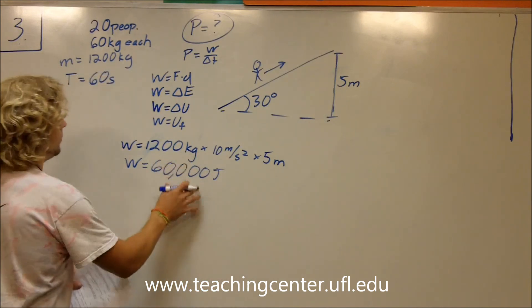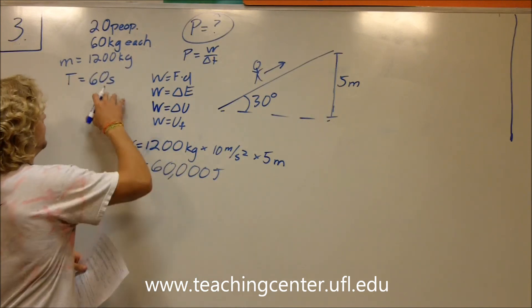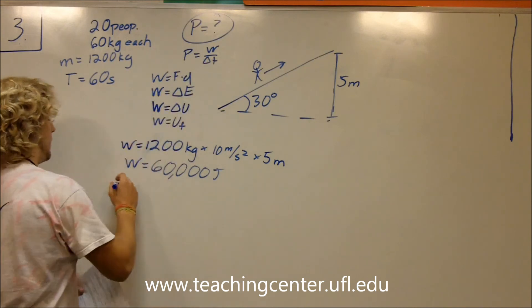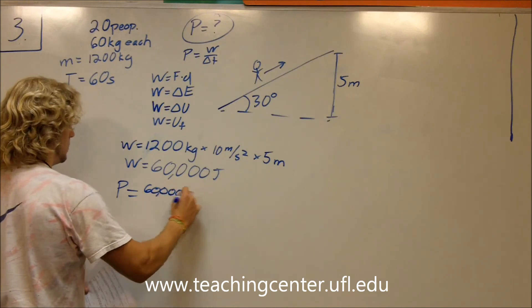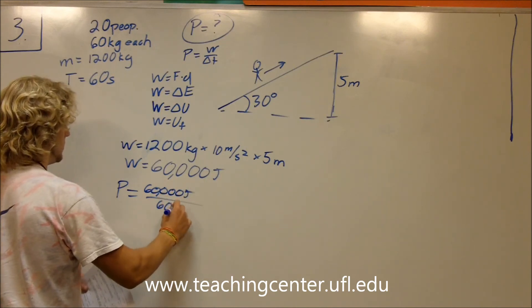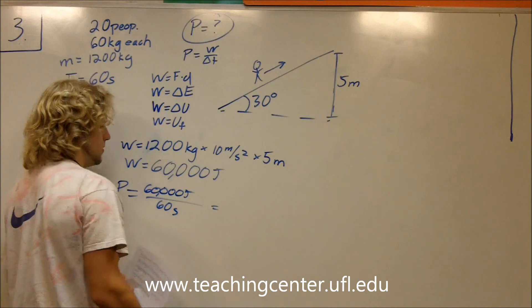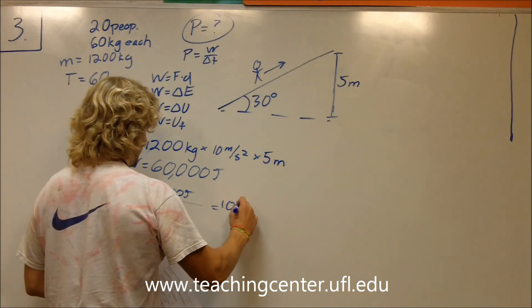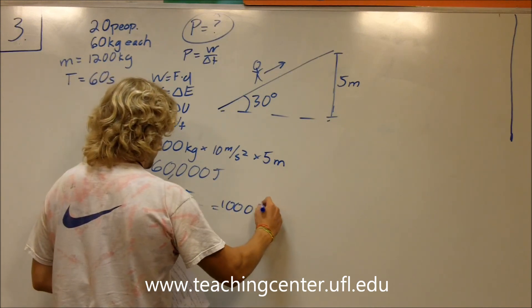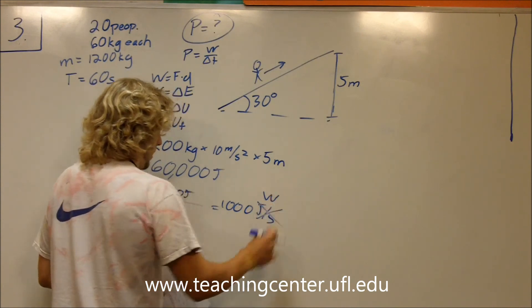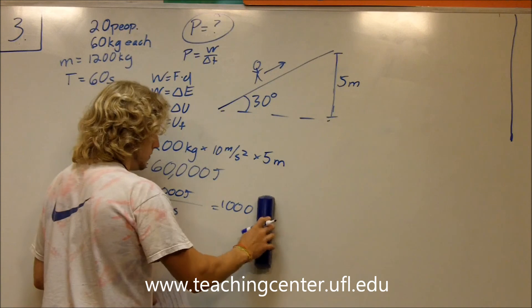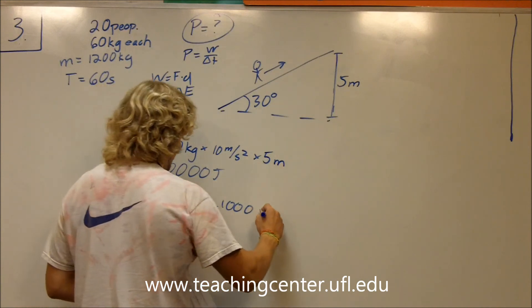Once we get to 60,000, we still have to find power. So power is equal to 60,000 joules over 60 seconds. That reduces down to 1,000 joules per second. We can put watts because joules per second and watts are the same thing.